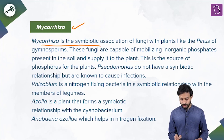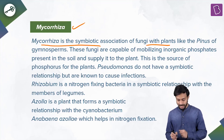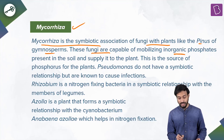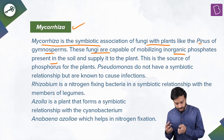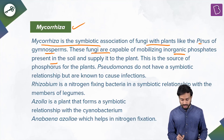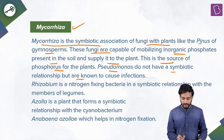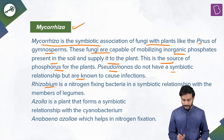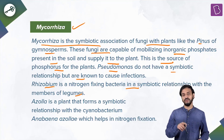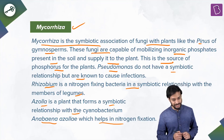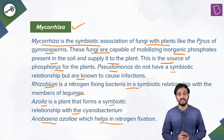Mycorrhiza is a symbiotic association of fungi with plants like Pinus of the gymnosperms. These fungi are capable of mobilizing inorganic phosphates present in the soil, absorbing and supplying them to the plants — a source of phosphorus for the plants. Azolla forms a symbiotic relationship with the cyanobacterium Anabaena azollae, which helps in nitrogen fixation. Mycorrhiza is the correct answer.